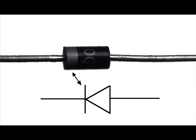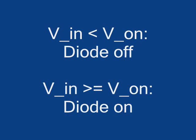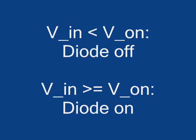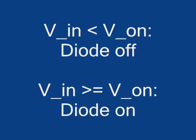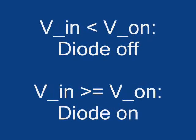To do this, rectifiers use diodes. A diode is like a valve. They switch on when the voltage drop across them is sufficiently great enough. This voltage is usually called V on.